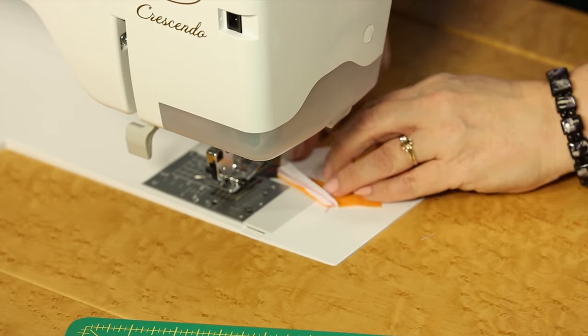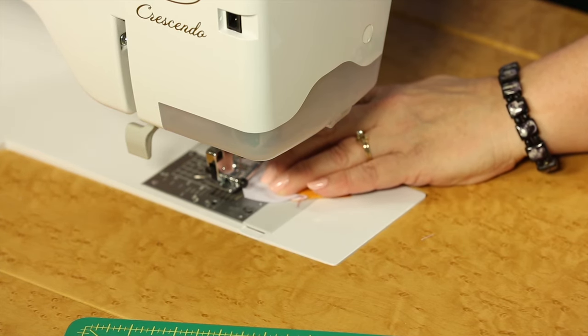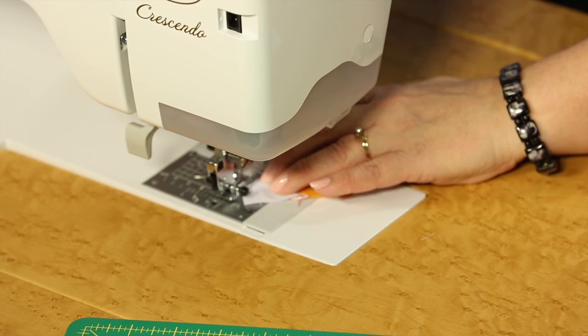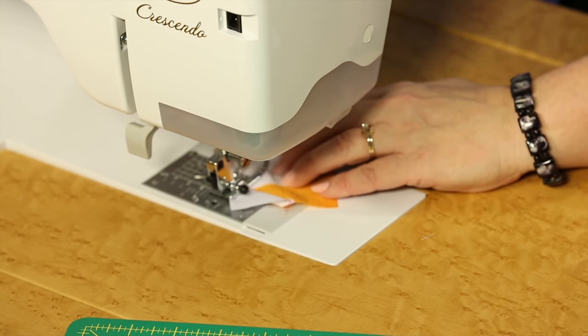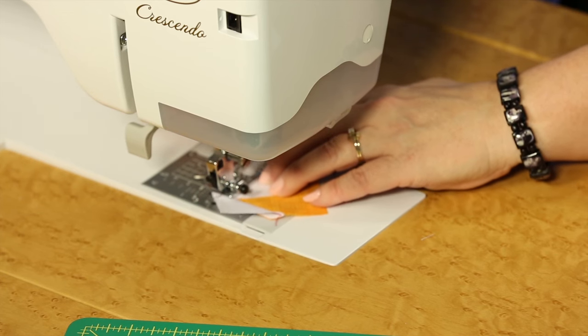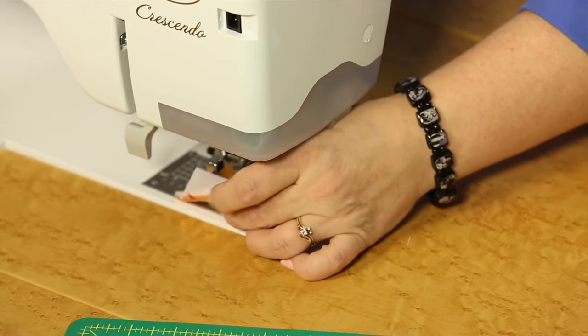You don't want to go to the opposite corner, but to an adjacent side of the block so that it makes a point on one side, kind of like a house or home plate. Okay, get across that side. Cut.